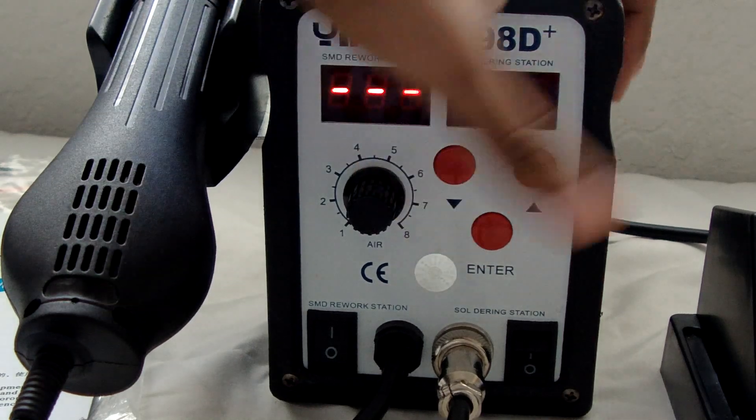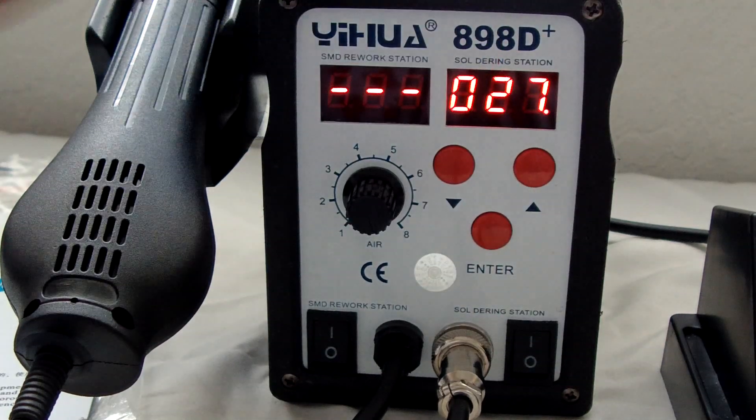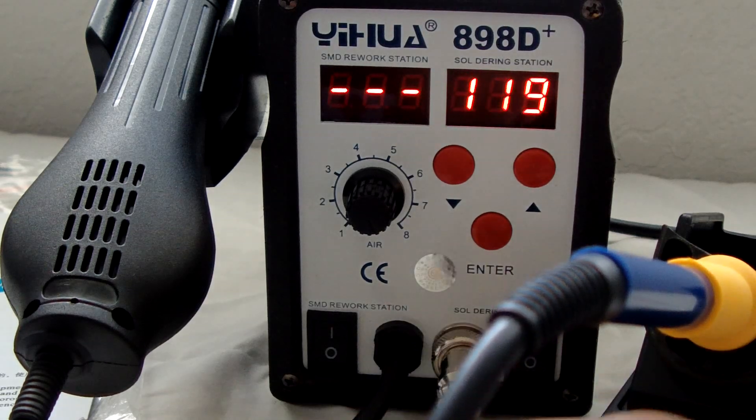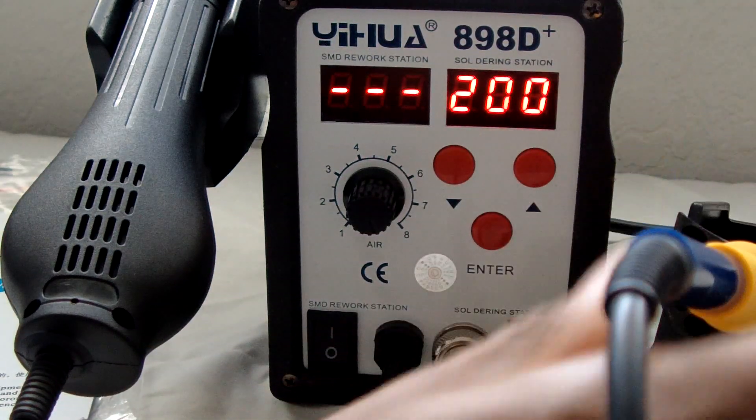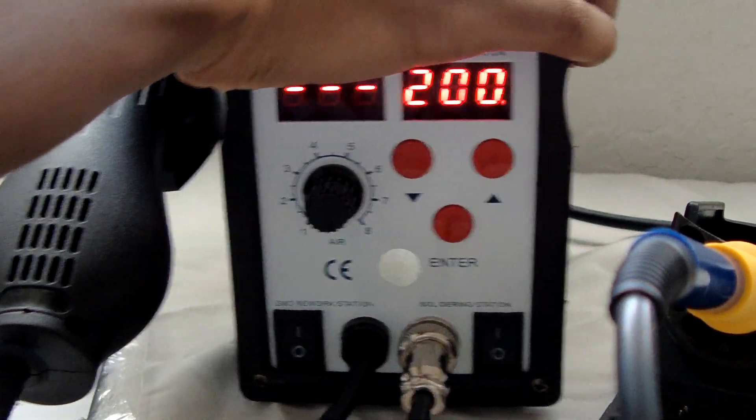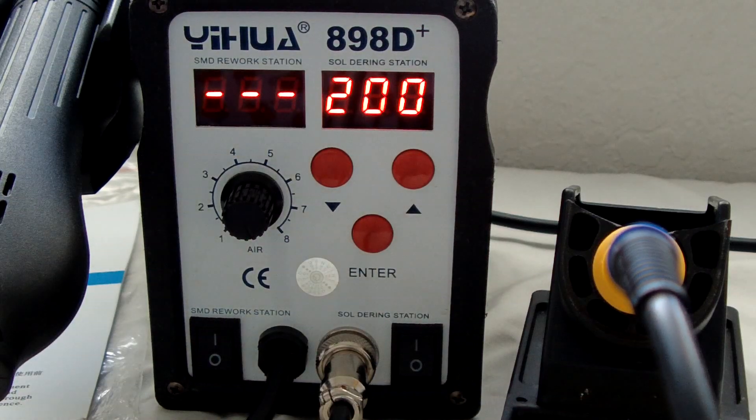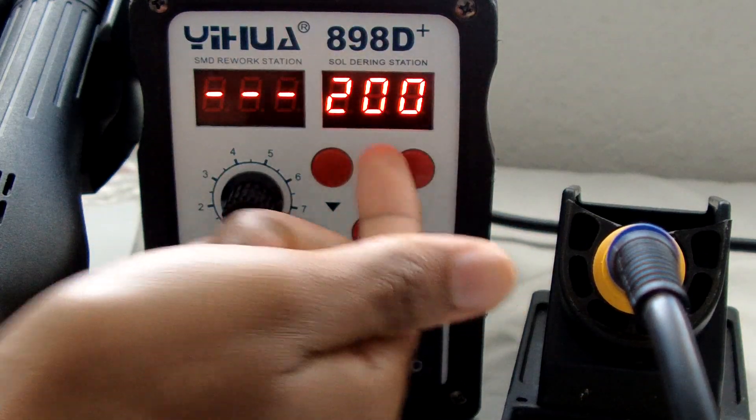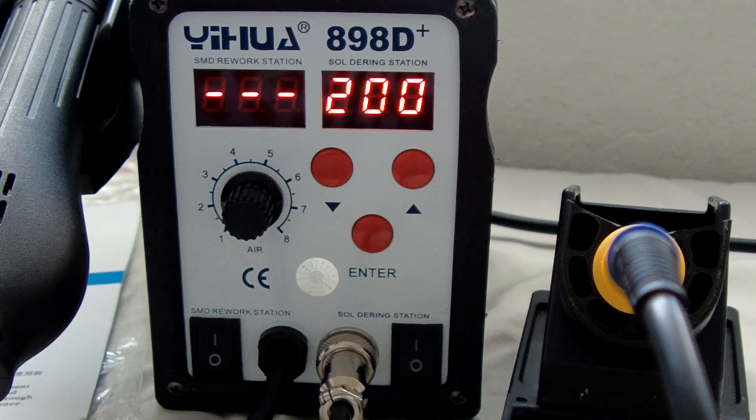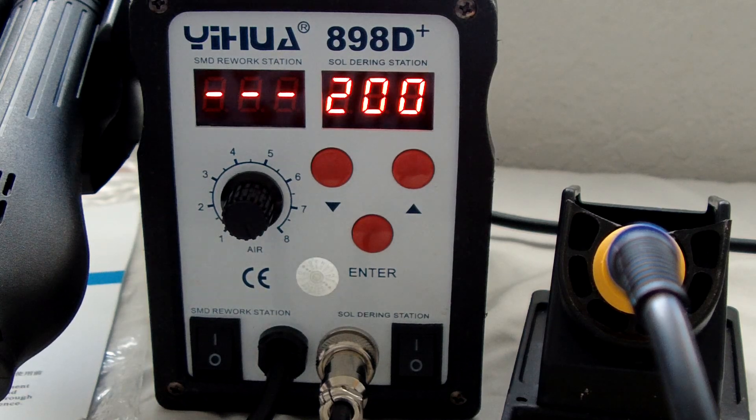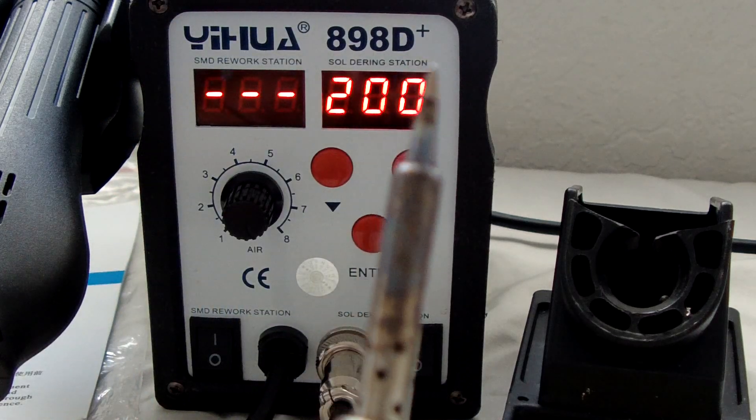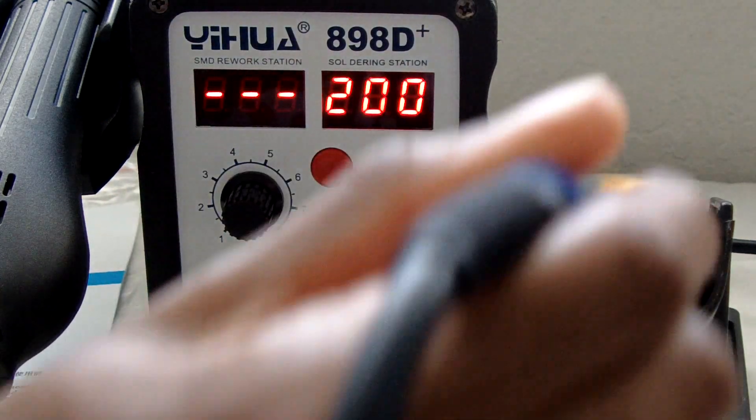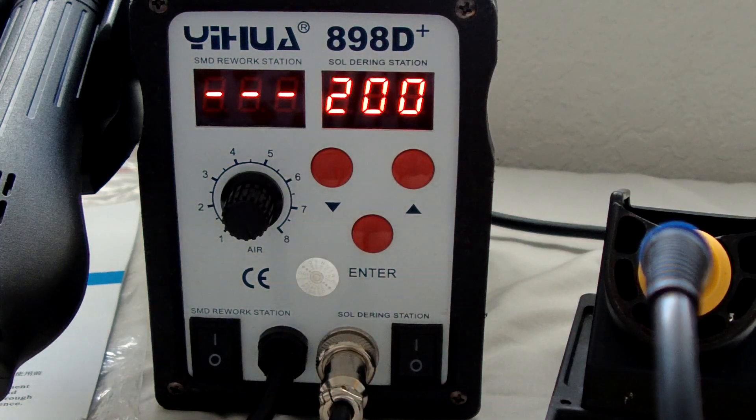The same thing for the iron side. The soldering iron does not do that when you put it back down inside the station. Whenever you take the soldering iron and you turn it on, it stays at that temperature. So if you set it for 200 degrees, it's going to stay at 200 degrees no matter where you put it. Now if you turn it off, of course it's going to turn off. But if you keep the switch on, it's going to stay at 200 degrees. So that could be a bad thing, but it doesn't really matter too much for me.